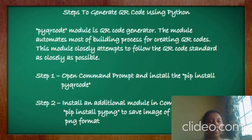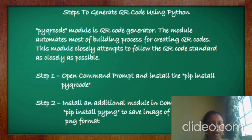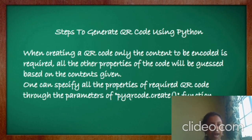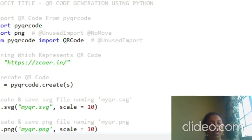Thanks Priyanka. Creating a QR code in Python is easy. We need to download the pyqrcode and pypng modules from the python.org website. The pyqrcode module is a QR code generator which does most of the building process, and the pypng module saves the image of the QR code in PNG format. While creating a QR code in Python, we only require the data to be encrypted. You can specify all the properties of the required QR code in the pyqrcode.create function. We have created a QR code for our college website in the PyDev plugin of Eclipse.